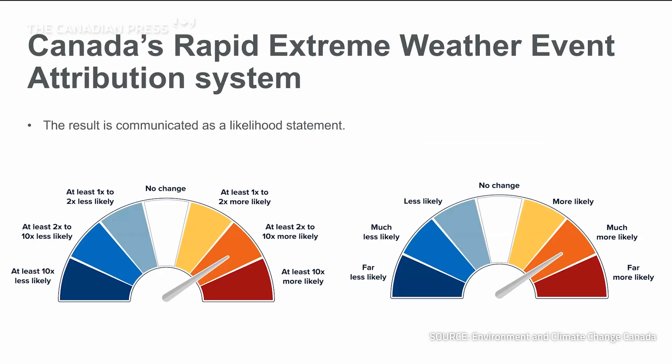Once we calculate the change in the likelihood of the event occurring between the current climate and the pre-industrial climate, we express this result as a likelihood statement. For example, if an event is 2 to 10 times more likely to occur because of human-caused climate change, we say that the event is much more likely to occur.